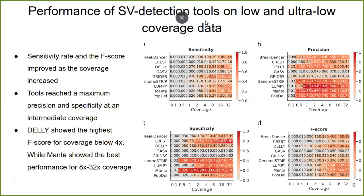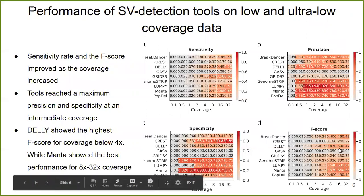We then study the performance of SV tools on low and ultra-low coverage data by downsampling the data from 32x to 0.1x. We observed that for sensitivity and F-score, the tools have a monotonically increasing trend — as coverage increases, sensitivity and F-score increase. But for specificity and precision, the tools reach a maximum at an intermediate coverage and then decrease on both ends. For the F-score, DELLY has the highest F-score for all coverages at 4x and below, and Manta is the best performing tool in terms of F-score for coverages from 8x to 32x.